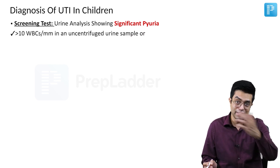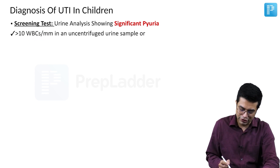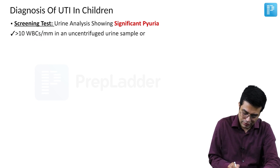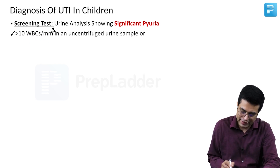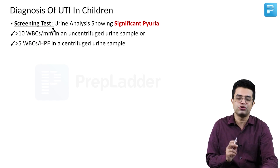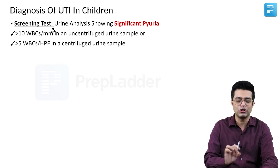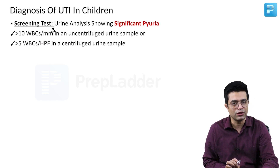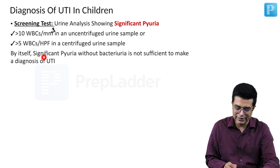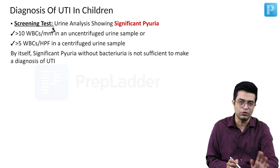What is significant pyuria? The definition: more than 10 WBCs per millimeter cube in an uncentrifuged urine sample, or more than 5 WBCs per high power field in a centrifuged urine sample, is called significant pyuria. It is a positive screening test for UTI, but significant pyuria without bacterial growth is not sufficient to make a diagnosis of UTI.